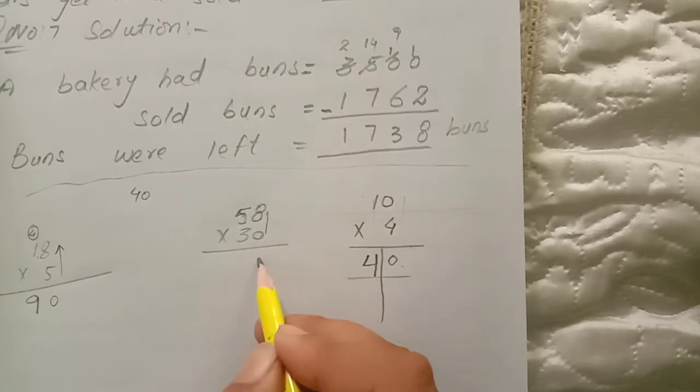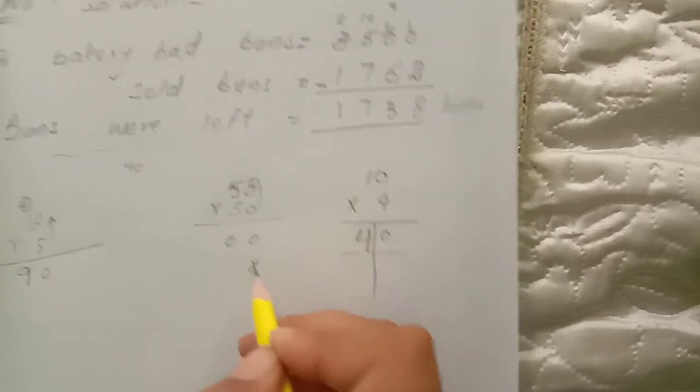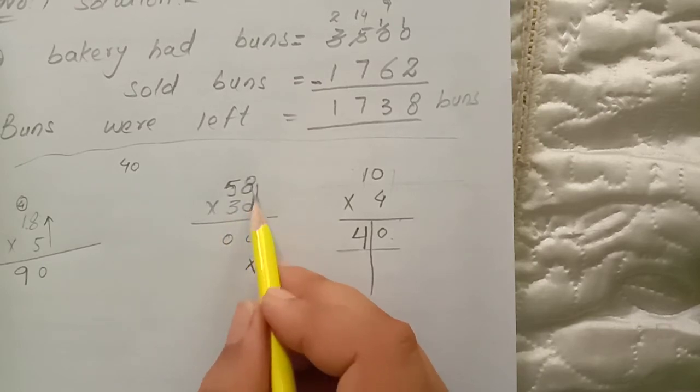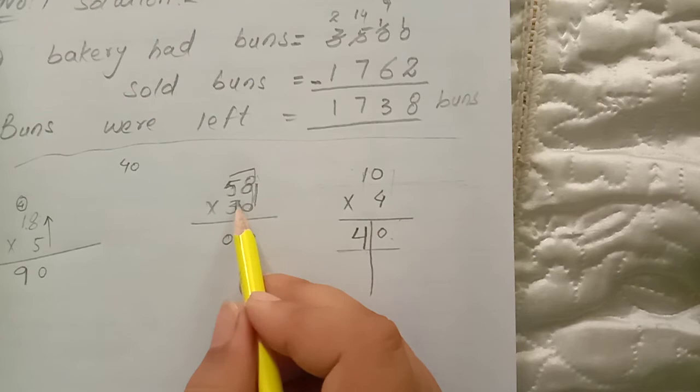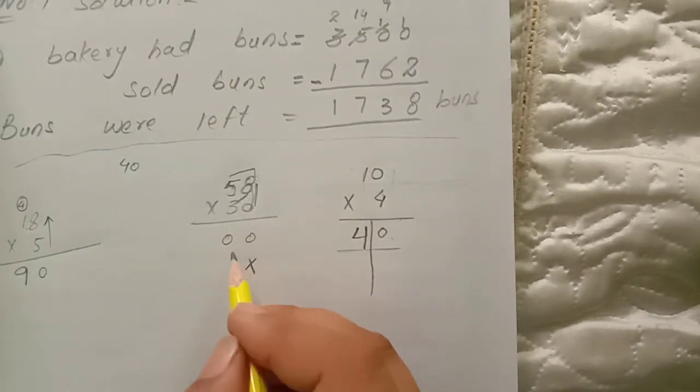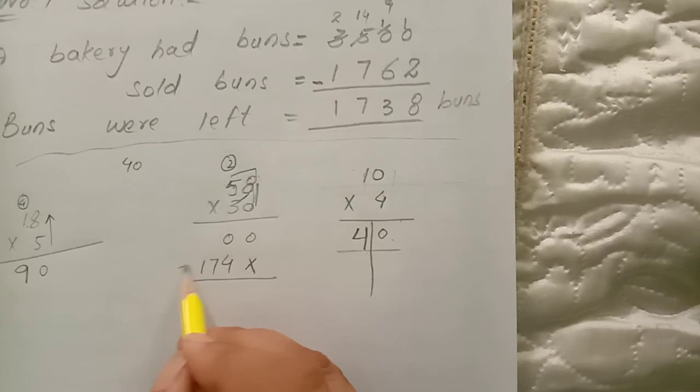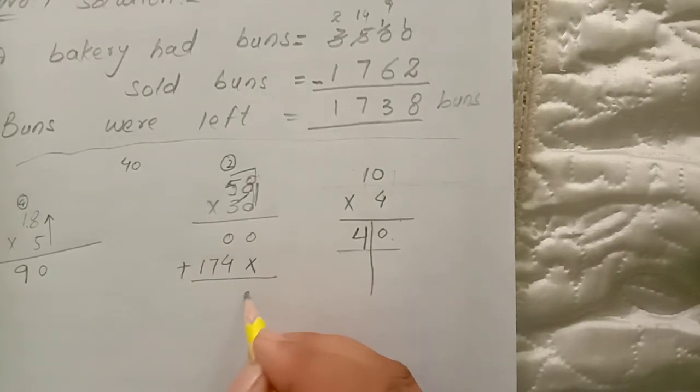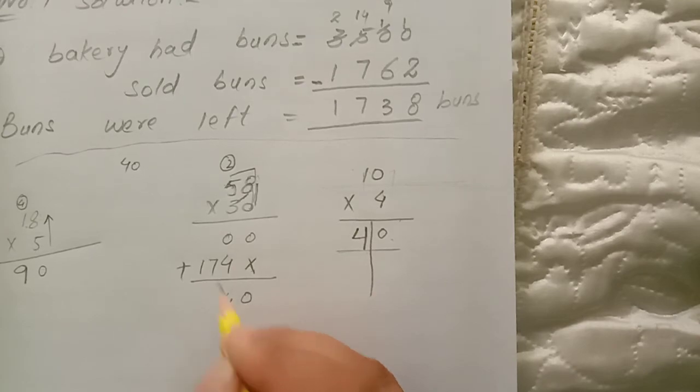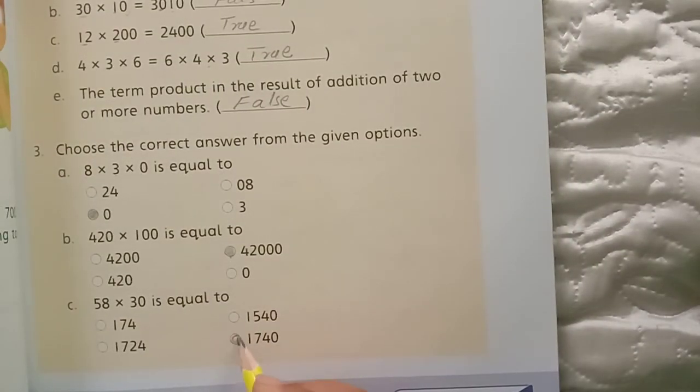C: 3×5×0. We multiply and get 1740. We have options, so we will select this one.